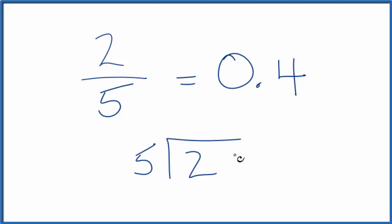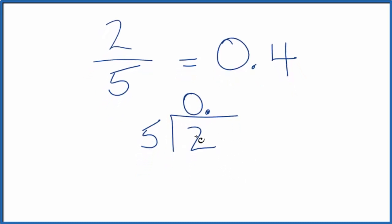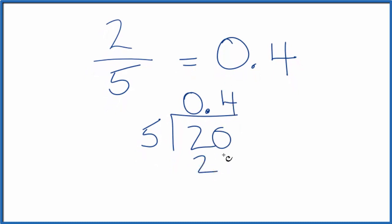5 doesn't go into 2 right now, so if we put zero point, we could then just call this 20. 4 times 5, that gives us 20.